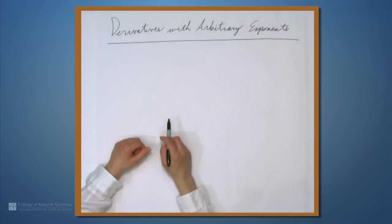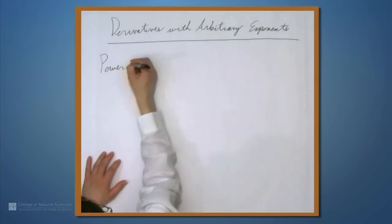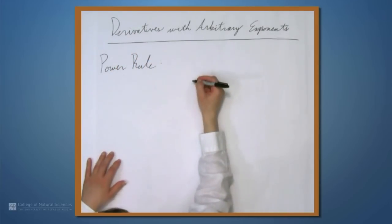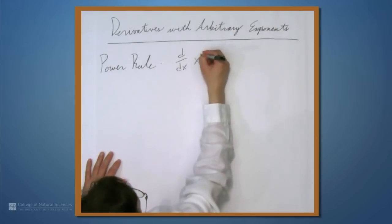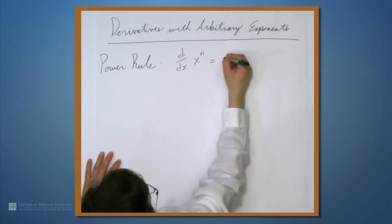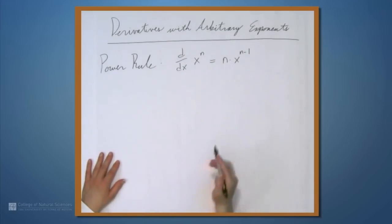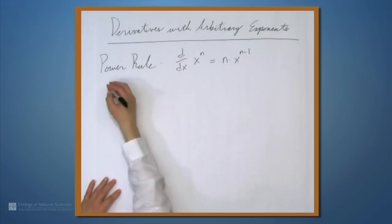In this video we're going to look at derivatives with arbitrary exponents. Let's remind ourselves of the power rule, which tells us how we can differentiate something of the form x to the n. The derivative with respect to x of x to the n is n times x to the n minus 1. The way this is usually first introduced is where n is a positive integer, but it turns out that this formula works no matter what n is. Let's look at some examples.